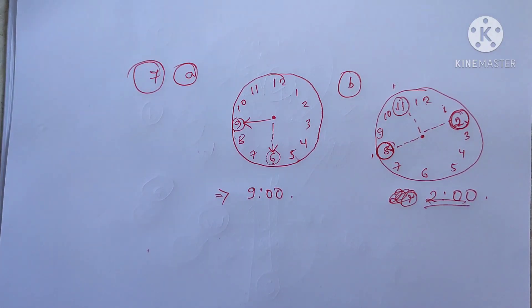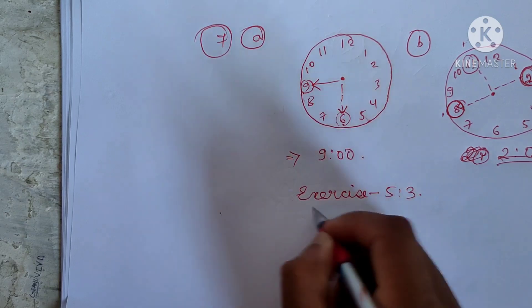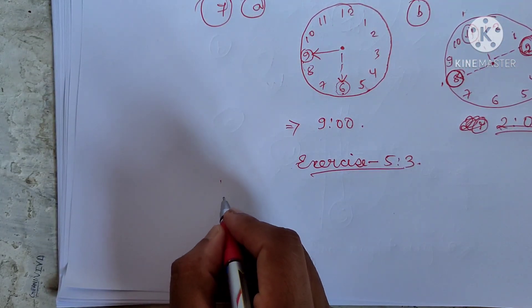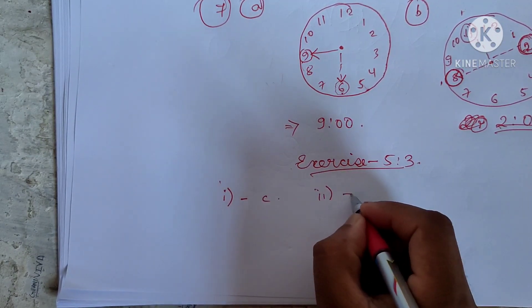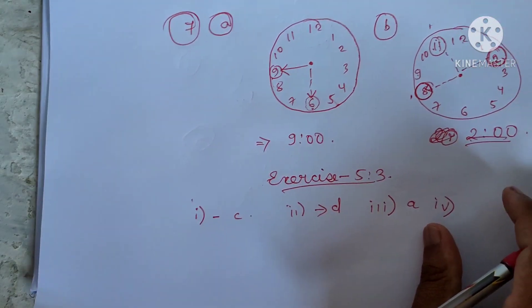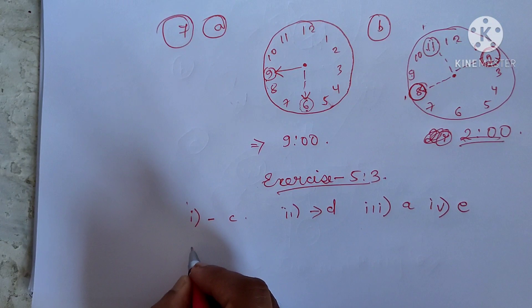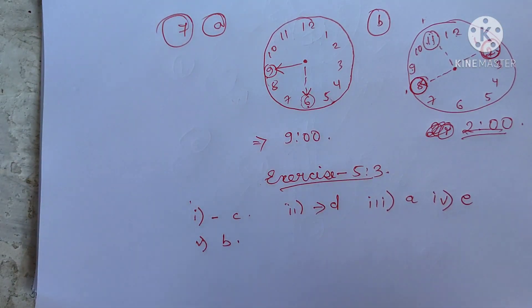Now let me give you the answers for Exercise 5.3 — match the following. Roman number one: answer is (c). Roman number two: answer is (d). Roman number three: answer is (a). Roman number four: answer is (e). Roman number five (reflex): answer is (b). That is the match the following answers.